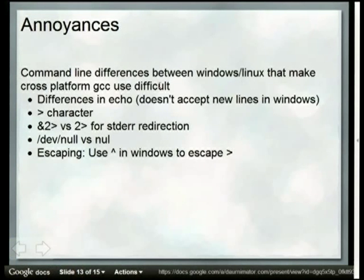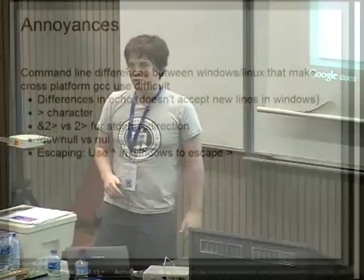A few annoyances in the differences between command-line environments when calling GCC with execute: Echo in Windows doesn't support newlines, so every line in a text file has to go to a different echo command piped to your target. The greater-than character has to be escaped with a caret, otherwise it does file redirection. For standard error, it's '2>' as opposed to the Linux '2>&1', and null versus /dev/null — just a few differences that took me a while to figure out.